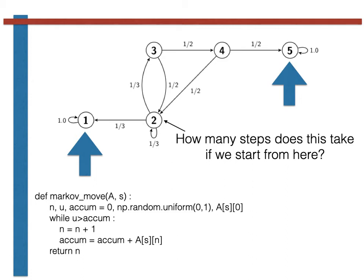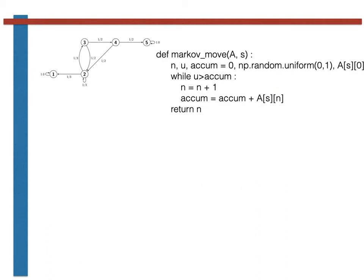If you do not yet understand this function, I would recommend that you go back and watch my previous video where I explained how this function works before continuing. With those prerequisites aside however, let's get on to writing the function for sampling the number of steps that the system takes prior to absorption. We will call the function that we are going to write time_to_absorption, and we pass it three arguments as shown here.